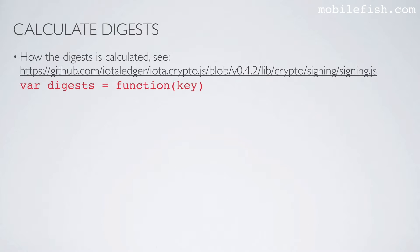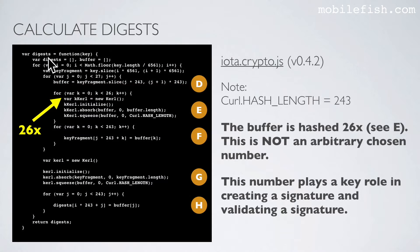Now let's see how the digest is calculated. You can find the source code via the referenced link and function. This is the code to calculate the digest, found in the iota.crypto.js library version 0.4.2. Please note the curl hash length is 243. The buffer is hashed 26 times — this is not an arbitrary number. This number plays a key role in creating and validating a signature, which will be explained in later videos.